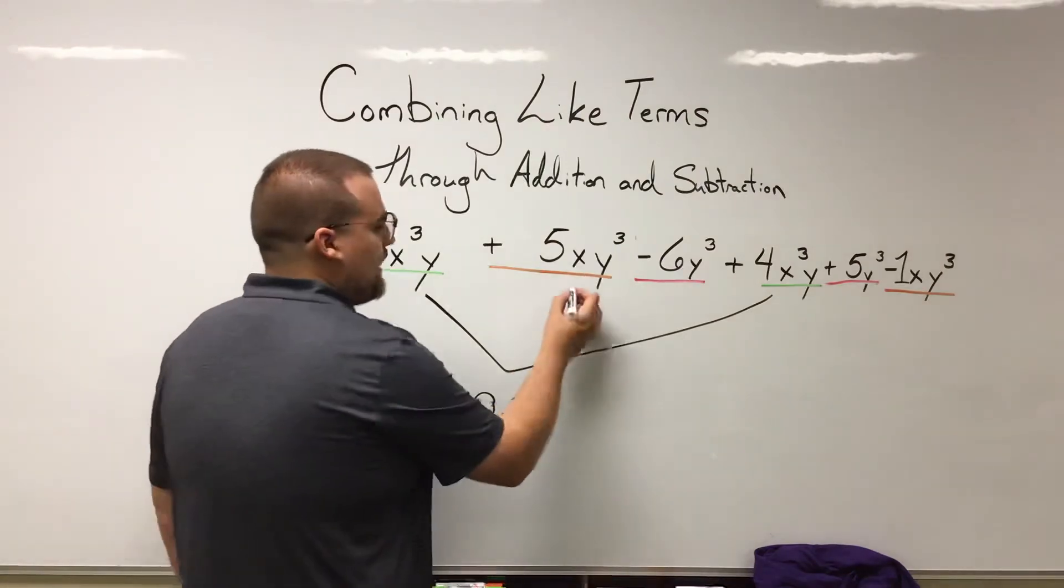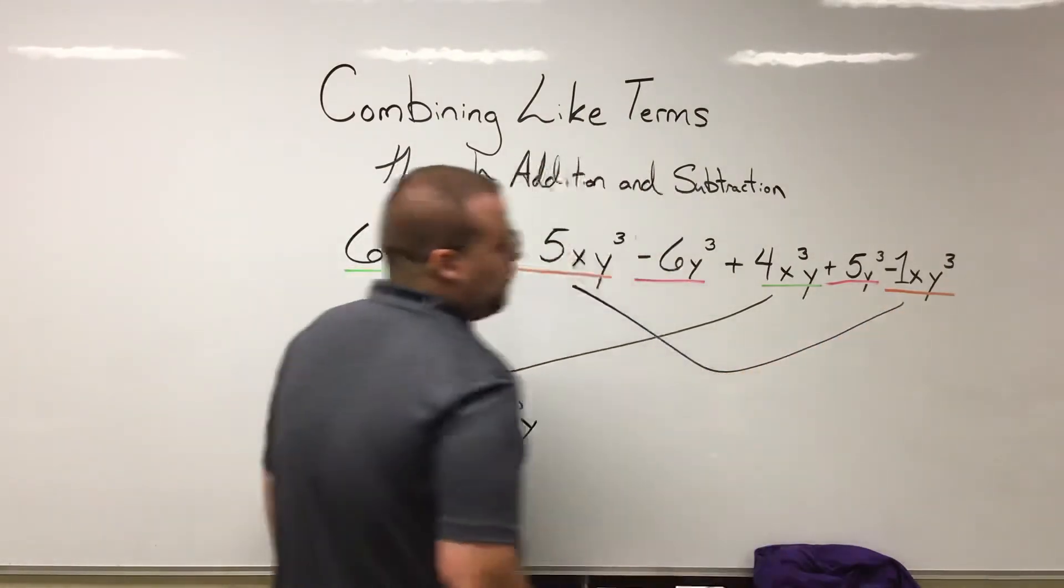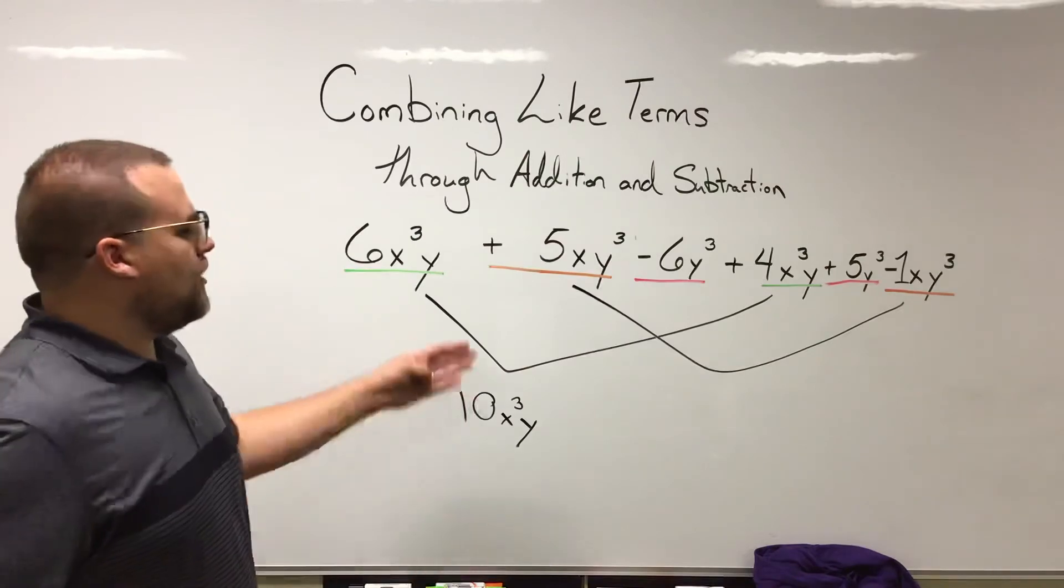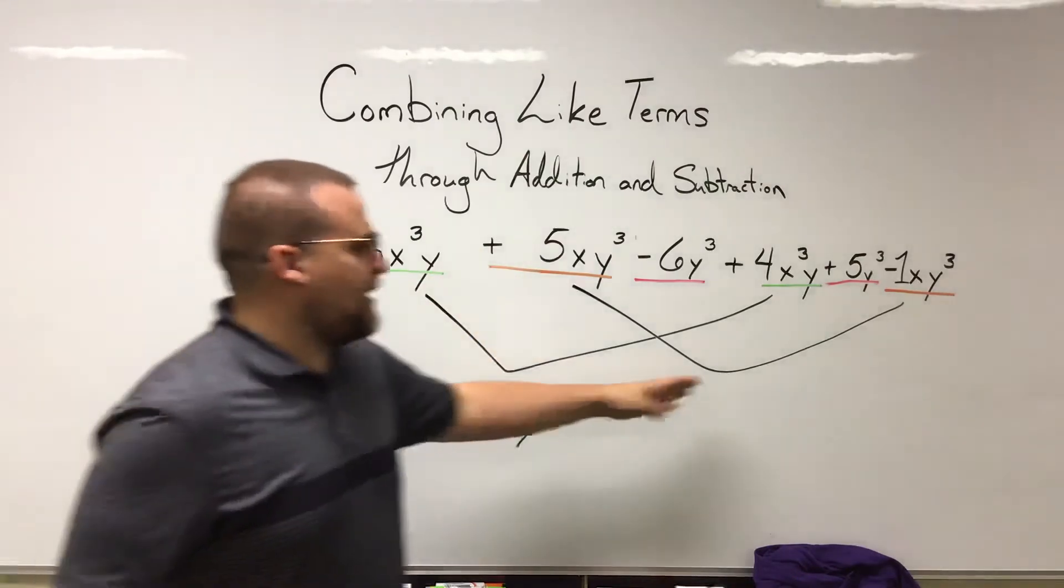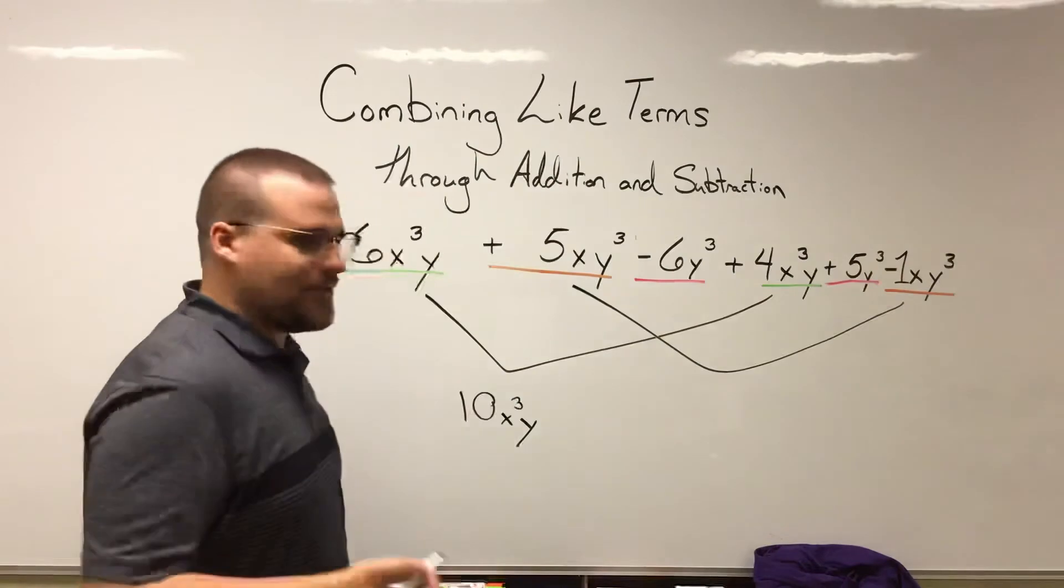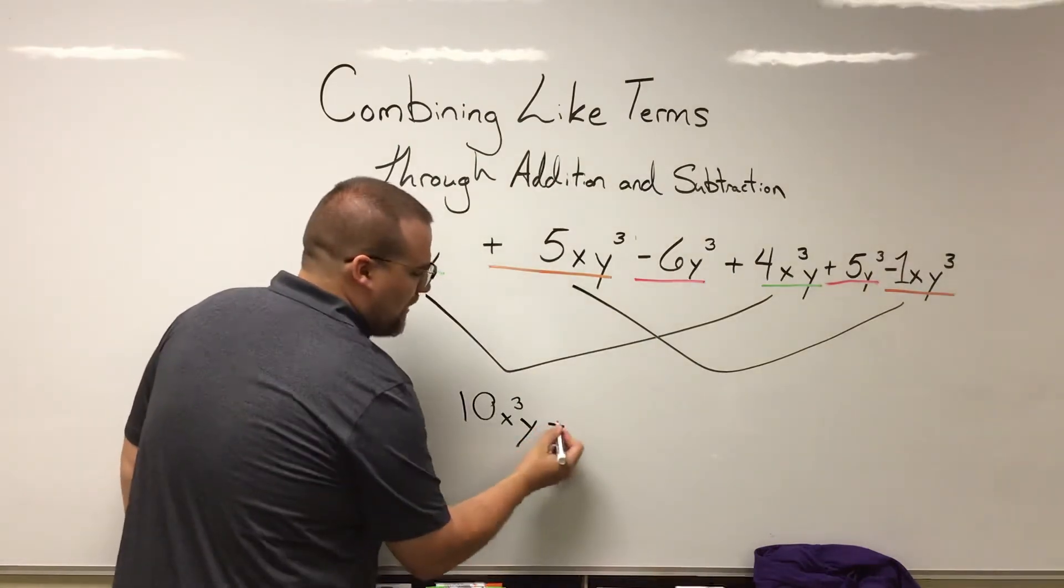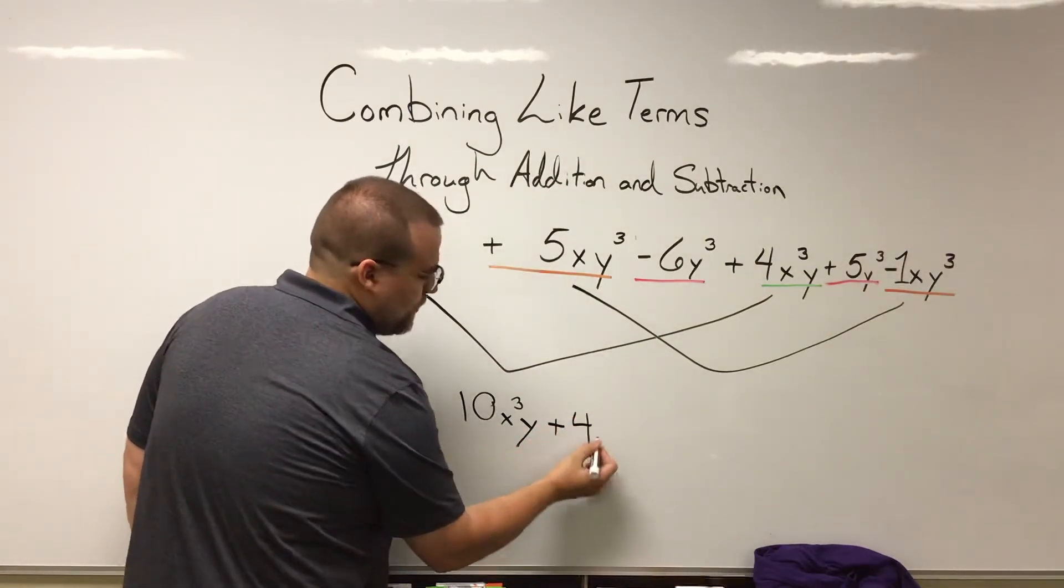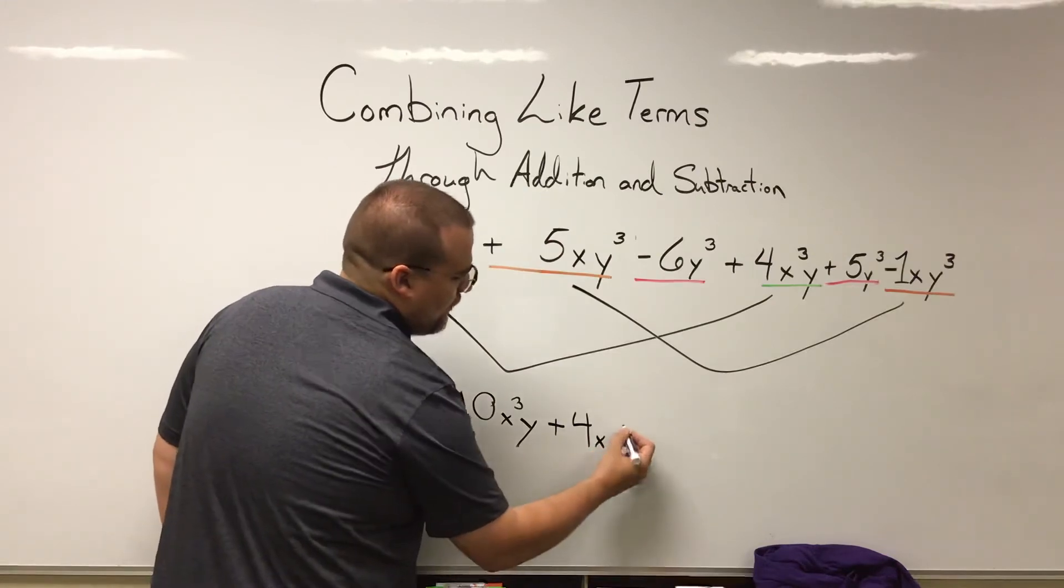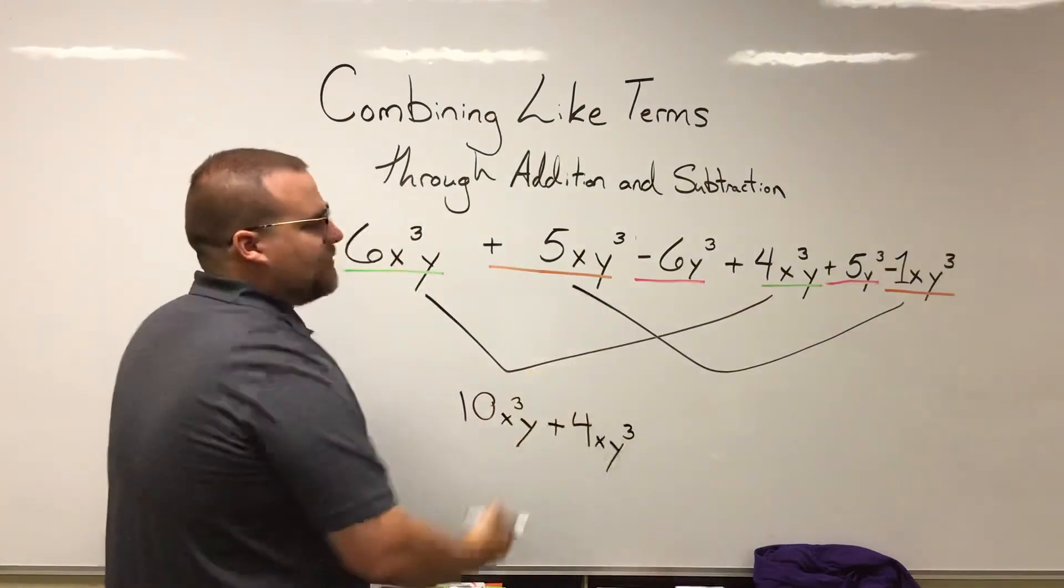Next up we can look at our other like terms. We have our XY³ terms here: 5 and -1. So 5 - 1 is going to get us a +4, and then I'll go ahead and fill in my variables as well. XY³ remaining the same.